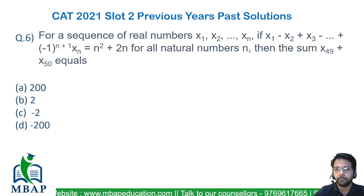x2 till xn, if x1 minus x2 plus x3 till minus 1 to the power n+1 times xn equals n square plus 2n for all natural numbers n, find the sum of x49 plus x50.